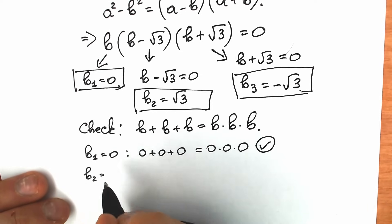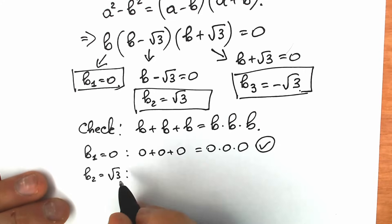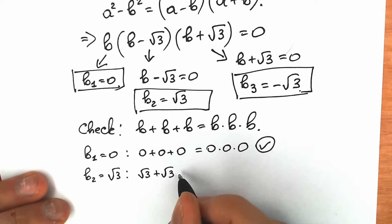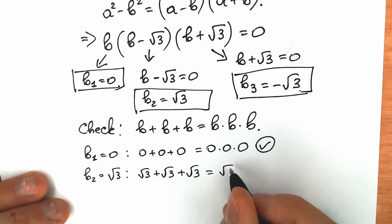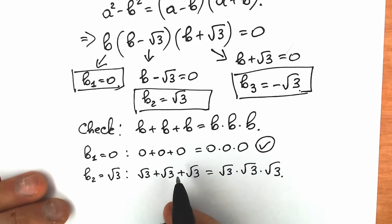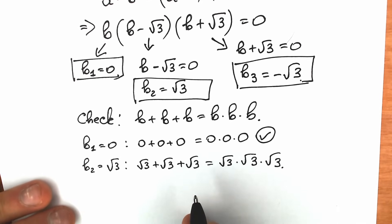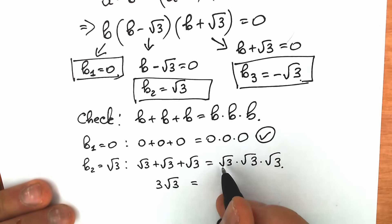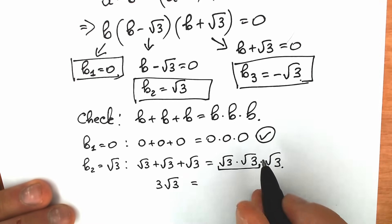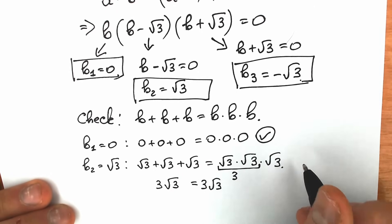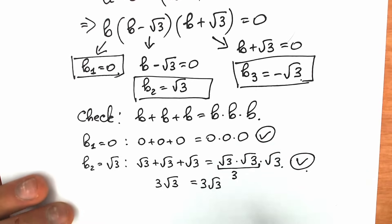Now the second root, b₂ equals square root of 3. Let's see what happens when we plug in square root of 3. We have square root of 3 plus square root of 3 plus square root of 3 equal to square root of 3 times square root of 3 times square root of 3. On the left side we have three square root of 3, which is 3√3. On the right side, square root of 3 times square root of 3 equals 3, and 3 times square root of 3 equals 3√3. Our second solution checks out.